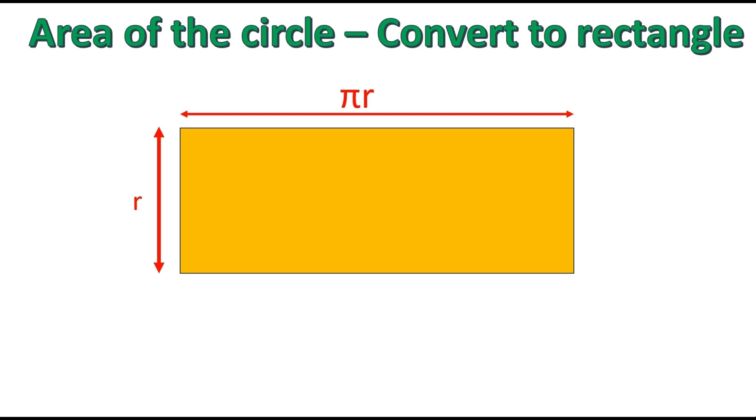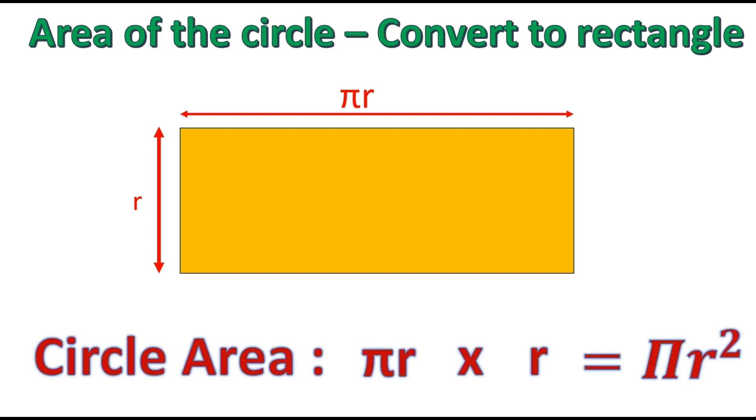The width of the rectangle is πr, which is half of the perimeter. The circular area is equivalent to πr times r, which is πr².